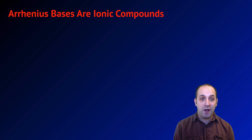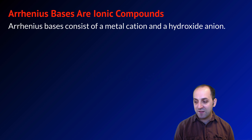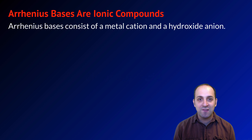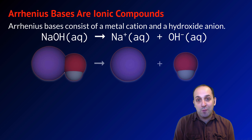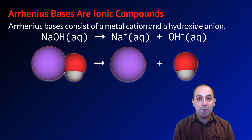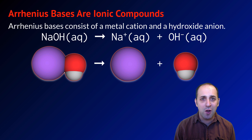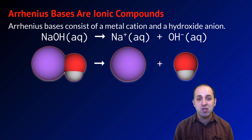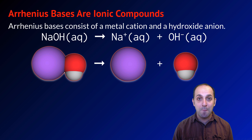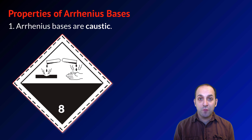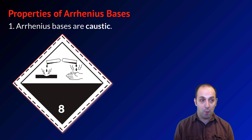Arrhenius bases are ionic compounds. They're always going to consist of a metal cation and a hydroxide anion. For example, NaOH: when put into water, it breaks apart into Na⁺ ions and OH⁻ ions. For simplicity I've shown one formula unit of NaOH, but in reality it exists in a big network structure like any ionic compound.